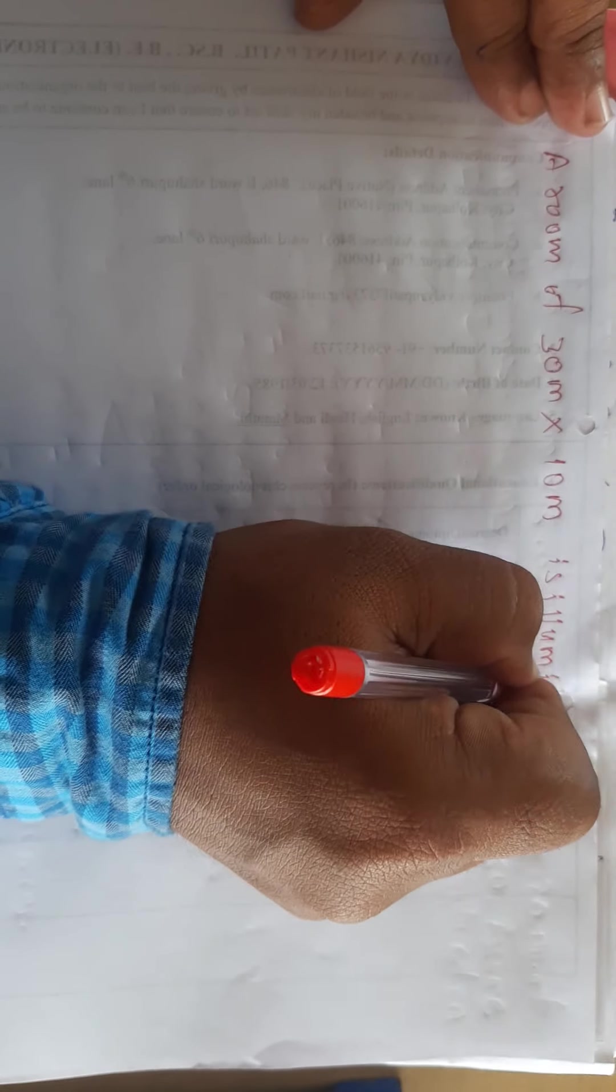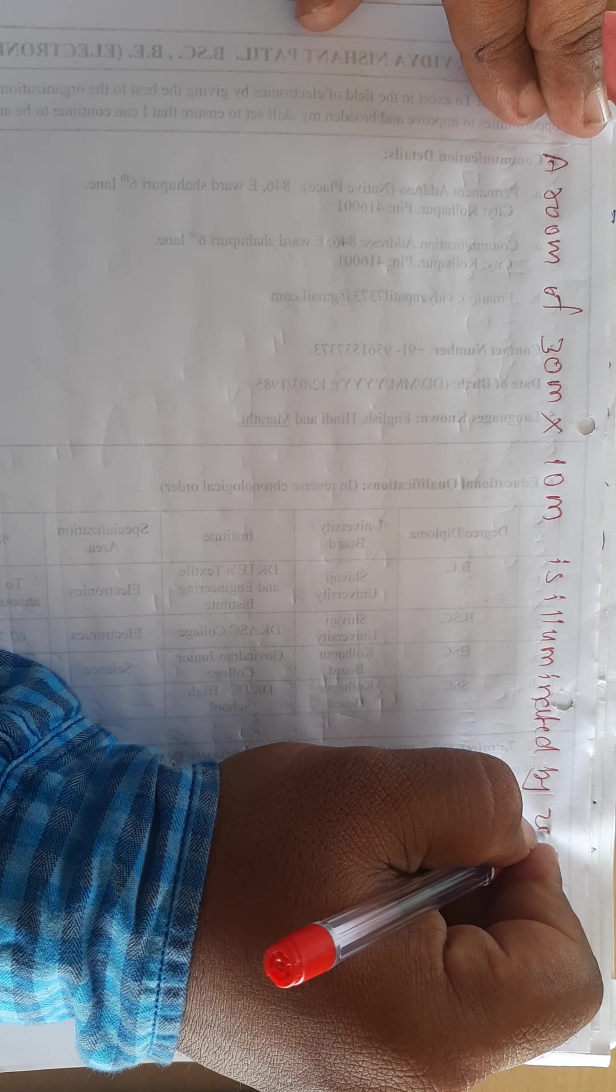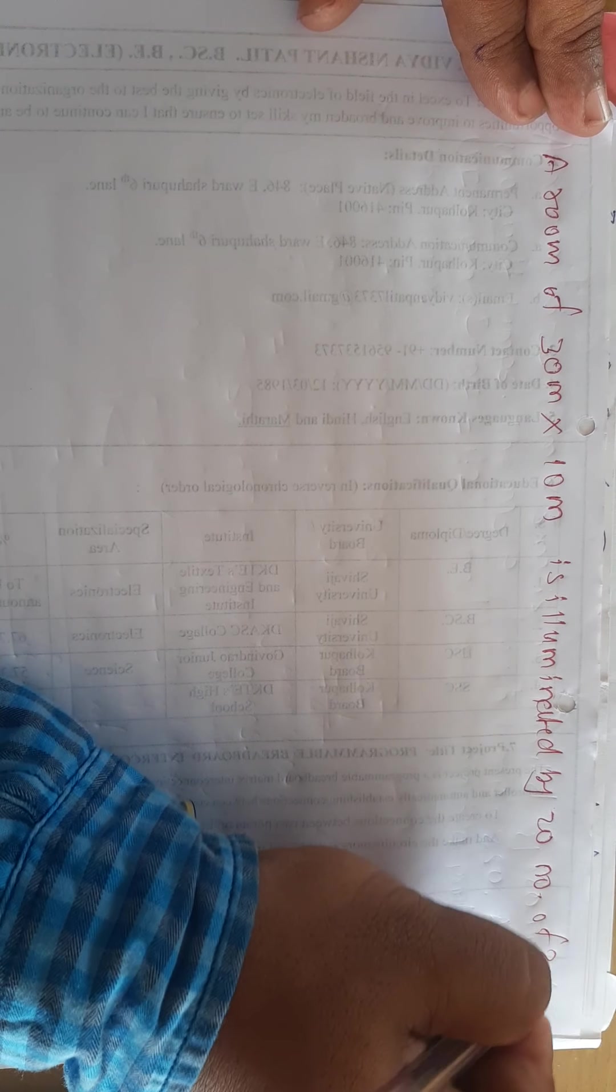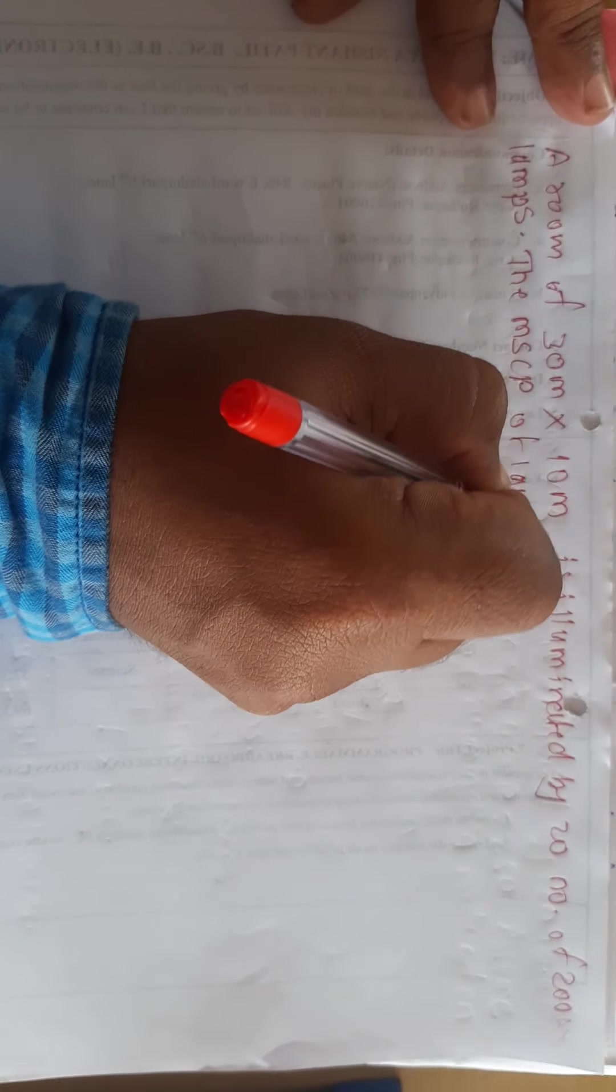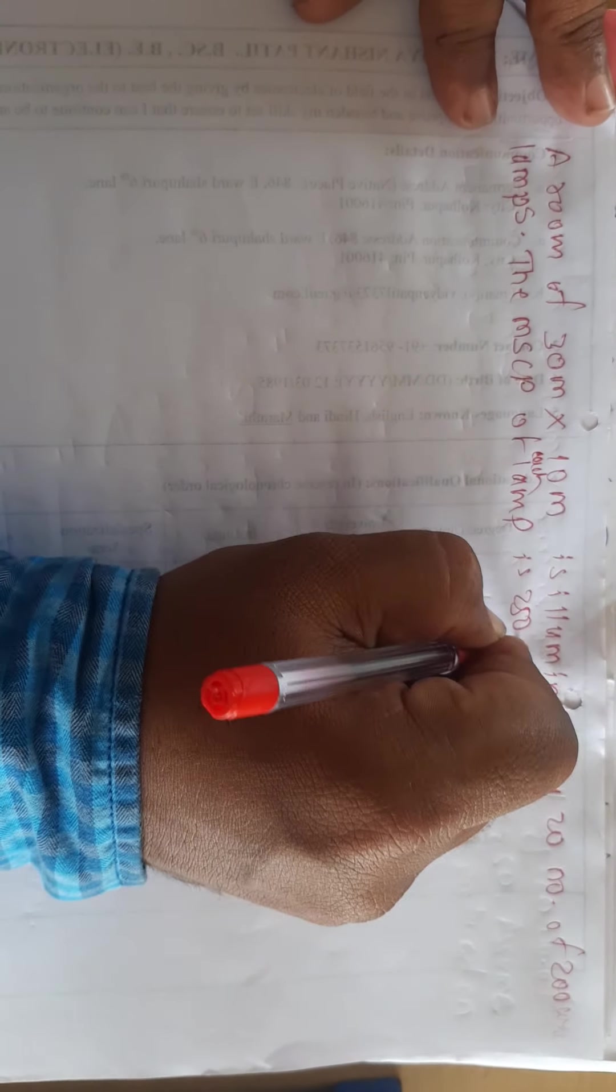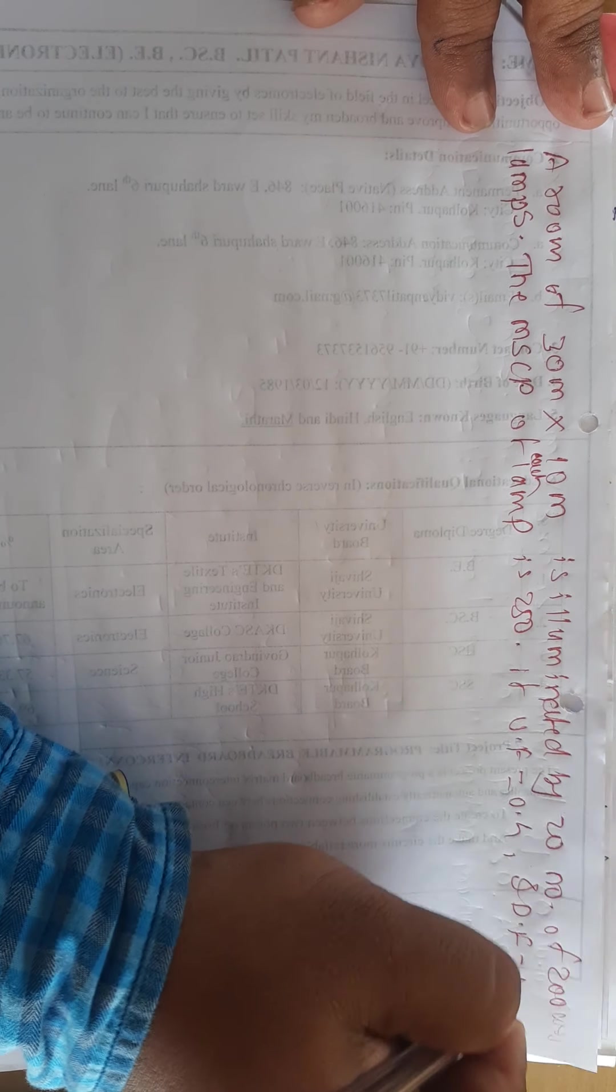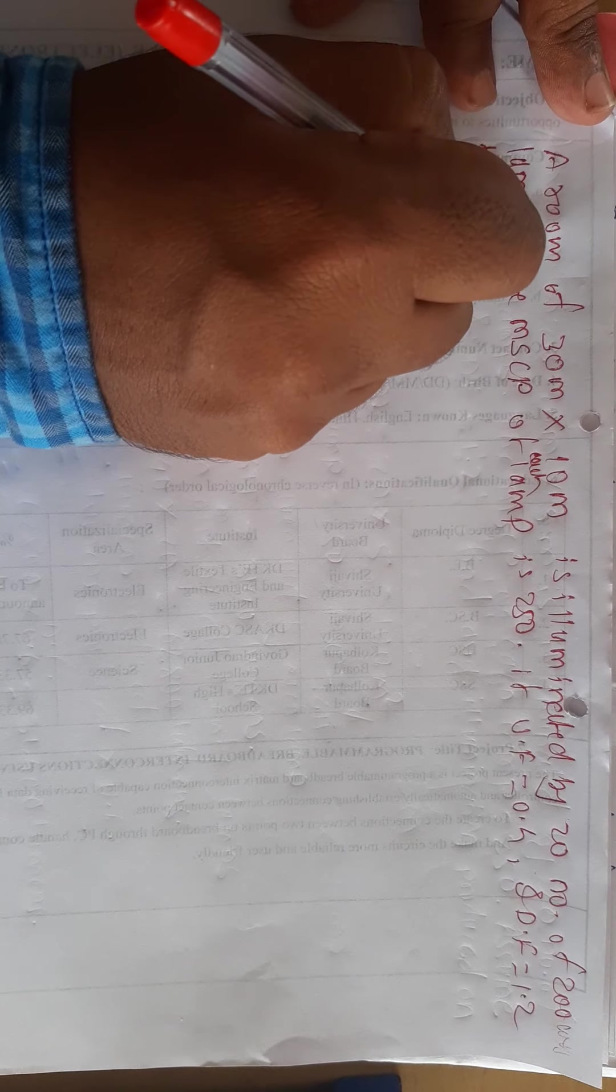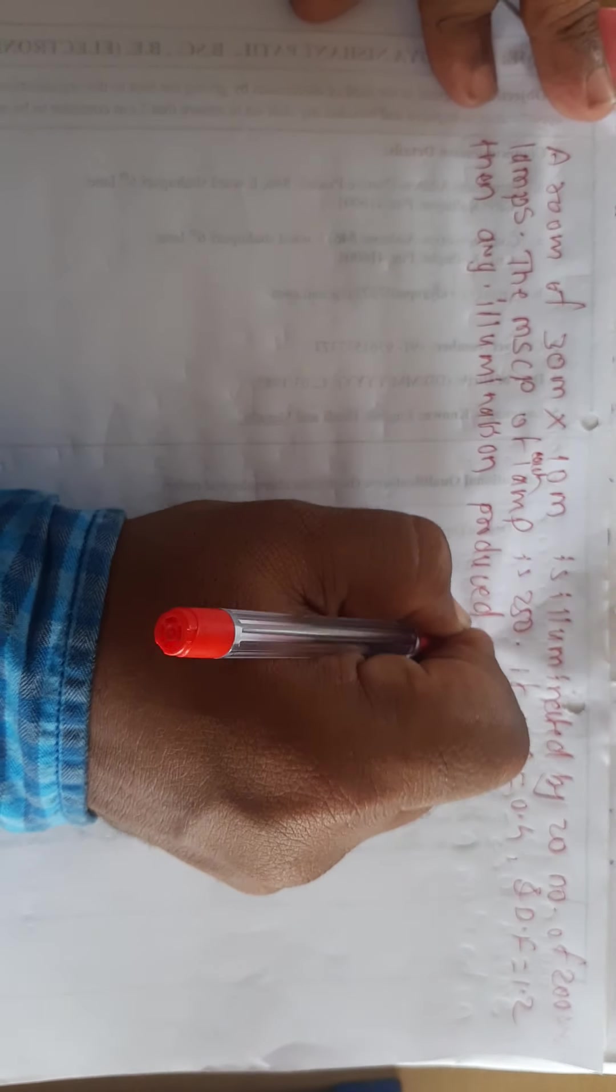A room of 30 meter into 10 meter is illuminated by 20 number of 200 watt lamps. The MSCP of each lamp is 250. If utilization factor is 0.4 and depreciation factor is 1.2, then find average illumination produced on the surface.